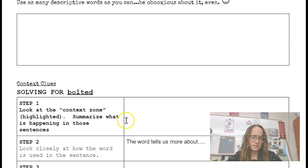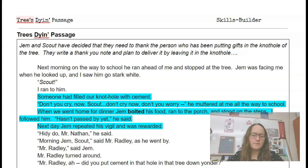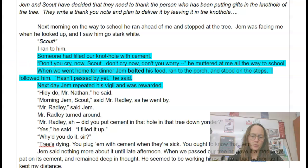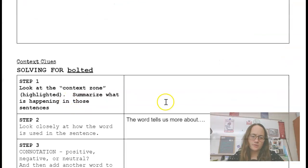Our next section is going to be based around figuring out what the word bolted means. So let's go ahead, and the first thing we need to do is go back to the passage to see bolted in context. And here it is. When we went home for dinner, Jem bolted his food, ran to the porch, and stood on the steps. I followed him. Hasn't passed by yet, he said. Next day, Jem repeated his vigil and was rewarded. So now we're going to go ahead and walk through the steps here.